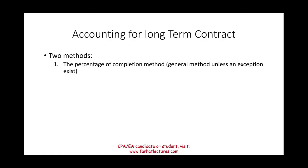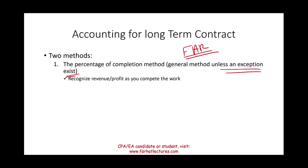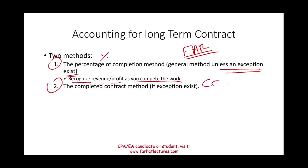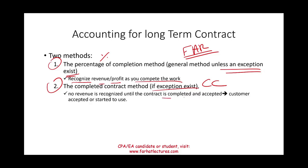There are two methods to account for long-term contracts. The percentage of completion method is the general method used unless an exception exists. Under this method, revenue and profit are recognized as you complete the work. If an exception exists, you may use the completed contract method, under which no revenue is recognized until the contract is completed and accepted by the customer.